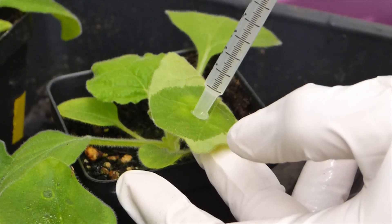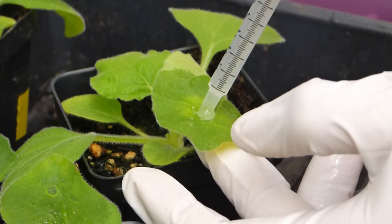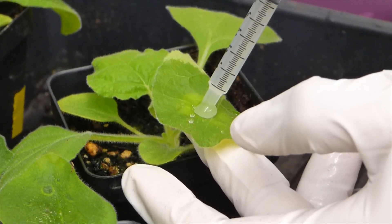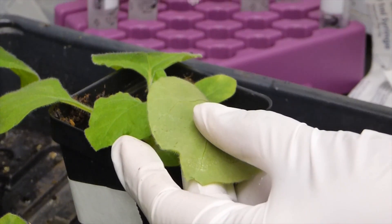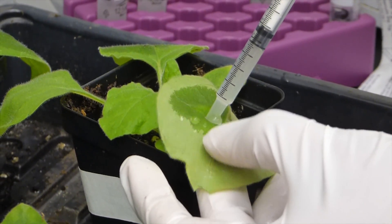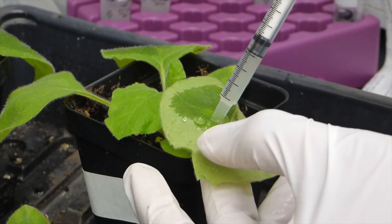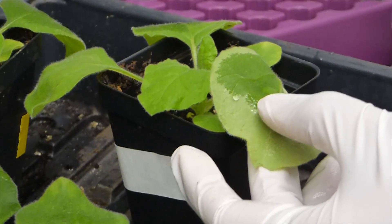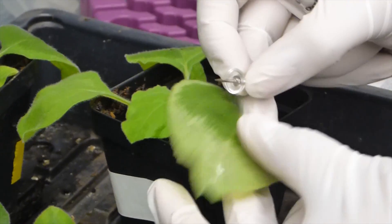Let's watch the agroinfiltration process again. Notice how the solution permeates the leaf. Pick a leaf that is mature, but not too old. When the leaves are too old, they become too thick to use. If the plant has flowered, it's too late.